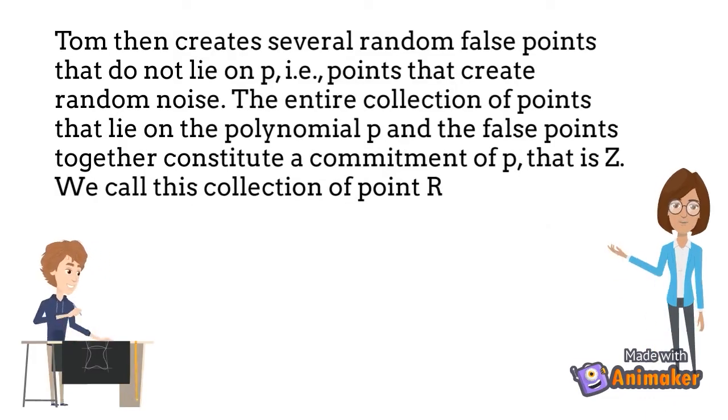Tom then creates several random false points that do not lie on P, that is points that create random noise. The entire collection of points that lie on the polynomial P and the false points together constitute a commitment of P, that is Z. We call this collection of points R.